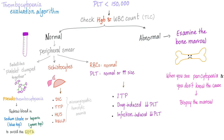But if the white blood cells and hemoglobin are normal, do the peripheral smear — you have three options. If you have satellites — the platelets are clumping together — this is pseudothrombocytopenia. Redraw the blood in another tube. Don't use the purple top; use the blue top or the green top to avoid the EDTA anticoagulant that causes this platelet clumping.